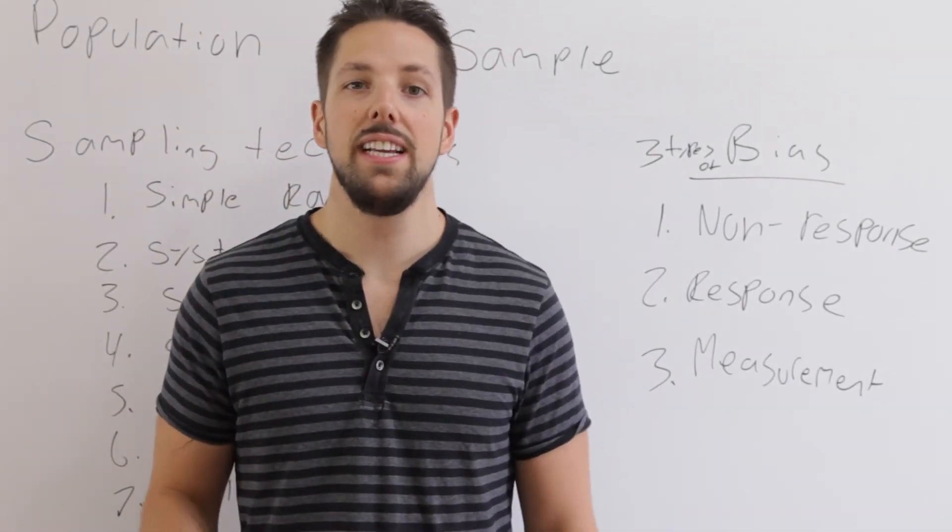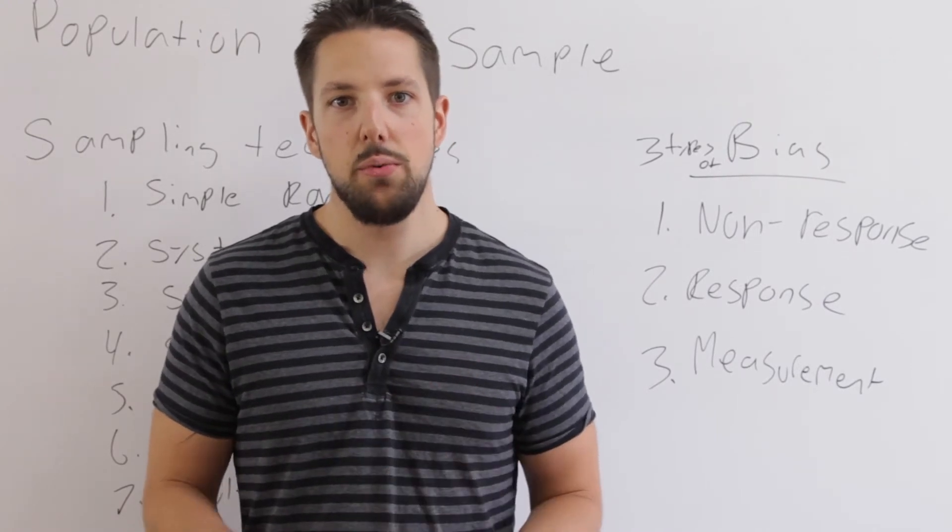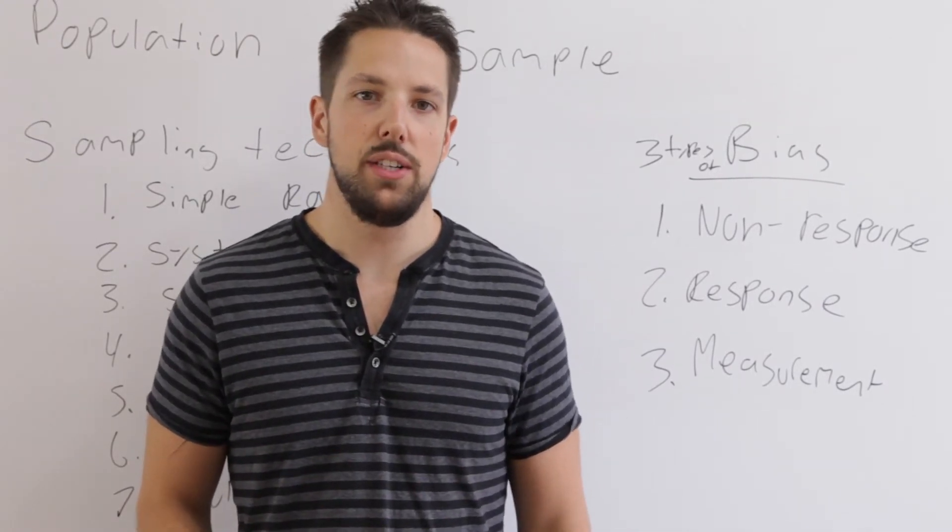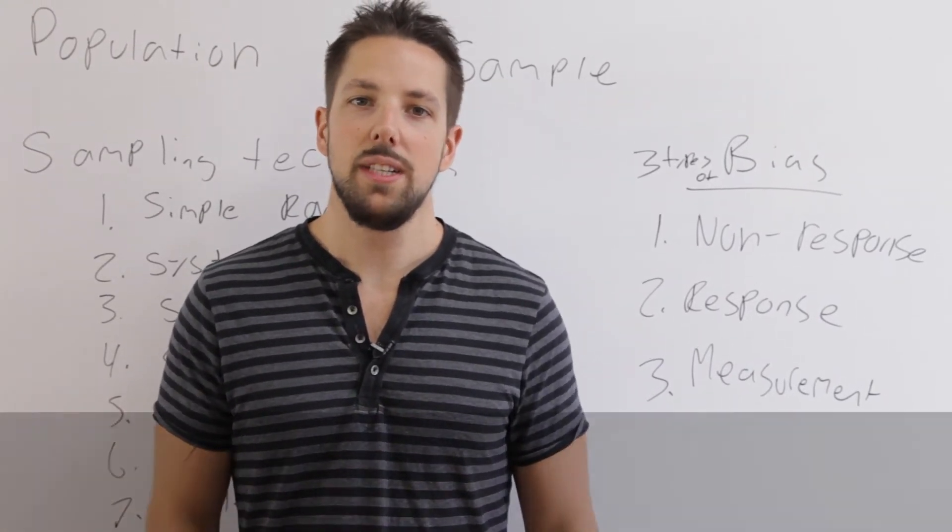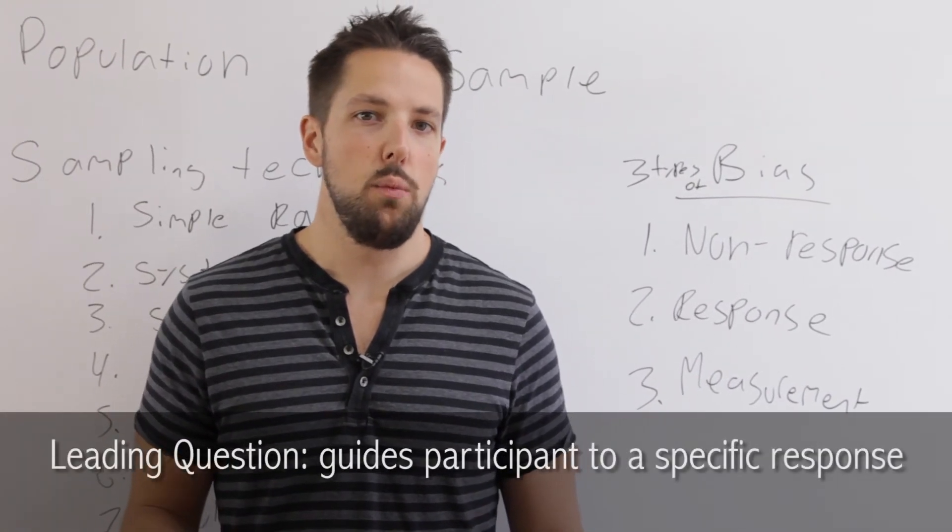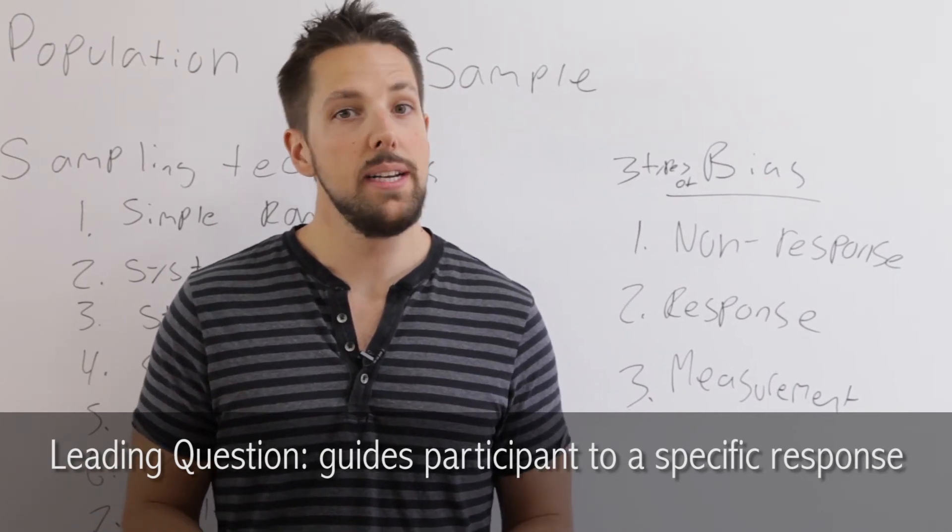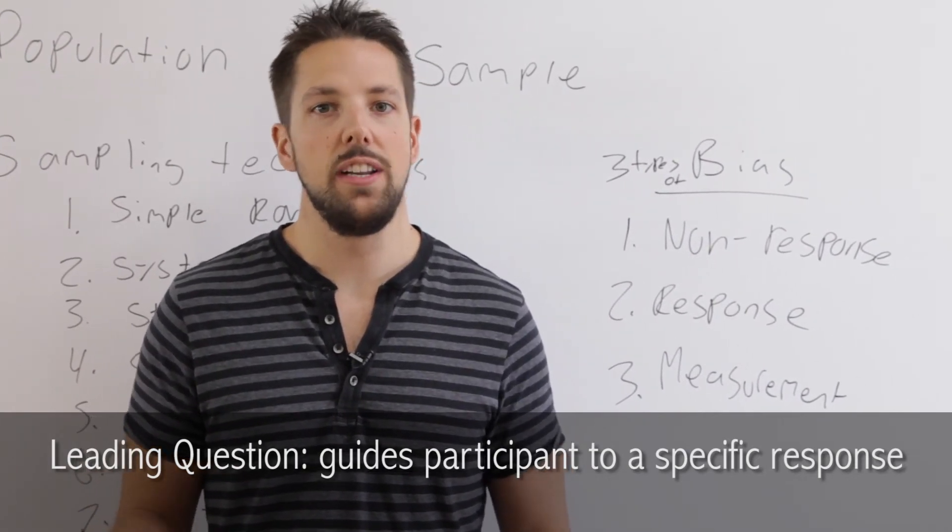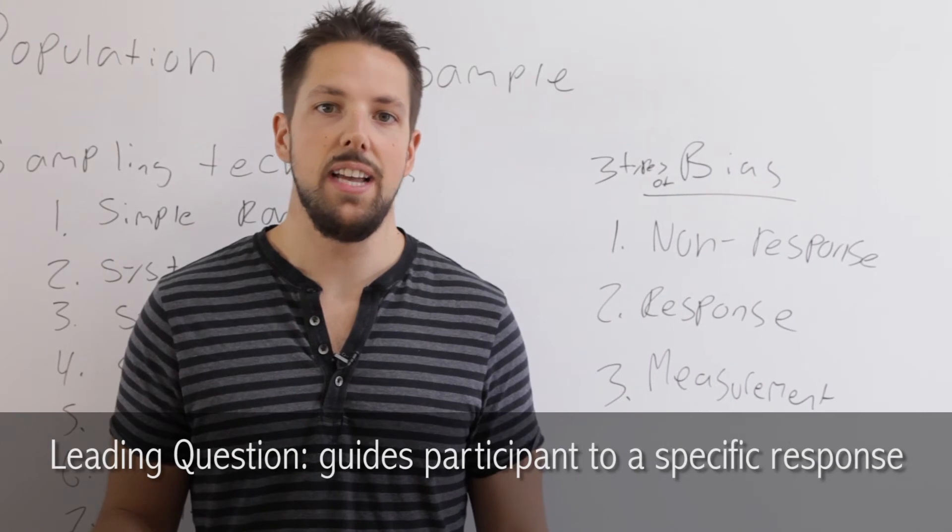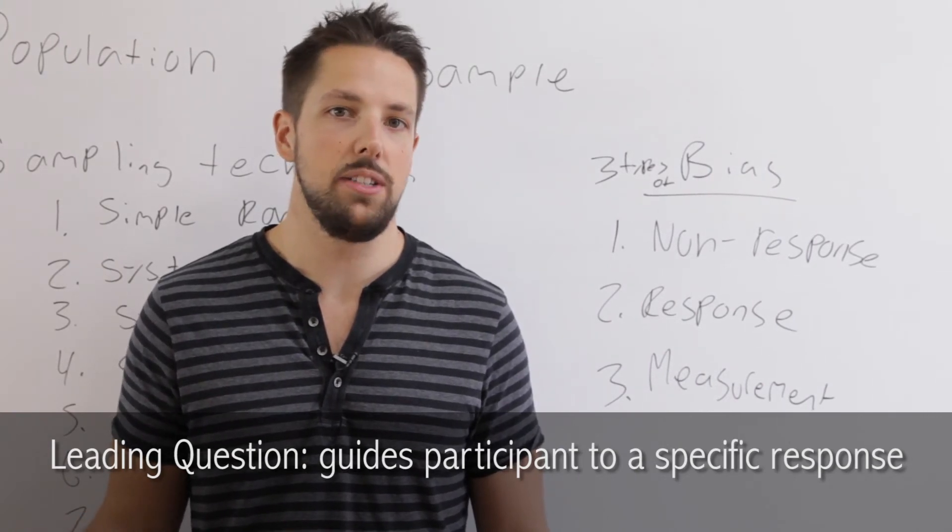Another type of measurement bias are leading and loaded questions. That's where you guide the person who's taking your survey towards a specific answer. An example of a leading question would be asking, what's your favorite movie? And then only giving three options. By limiting the answers to three options, you're leading the person taking your survey to answer one of those movies, which would bias your result.